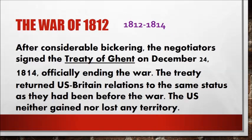After considerable bickering, the negotiators signed the Treaty of Ghent on December 24, 1814, officially ending the war. The treaty returned U.S. and Britain relations to the same status that they had been before the war. The U.S. neither gained nor lost any territory.